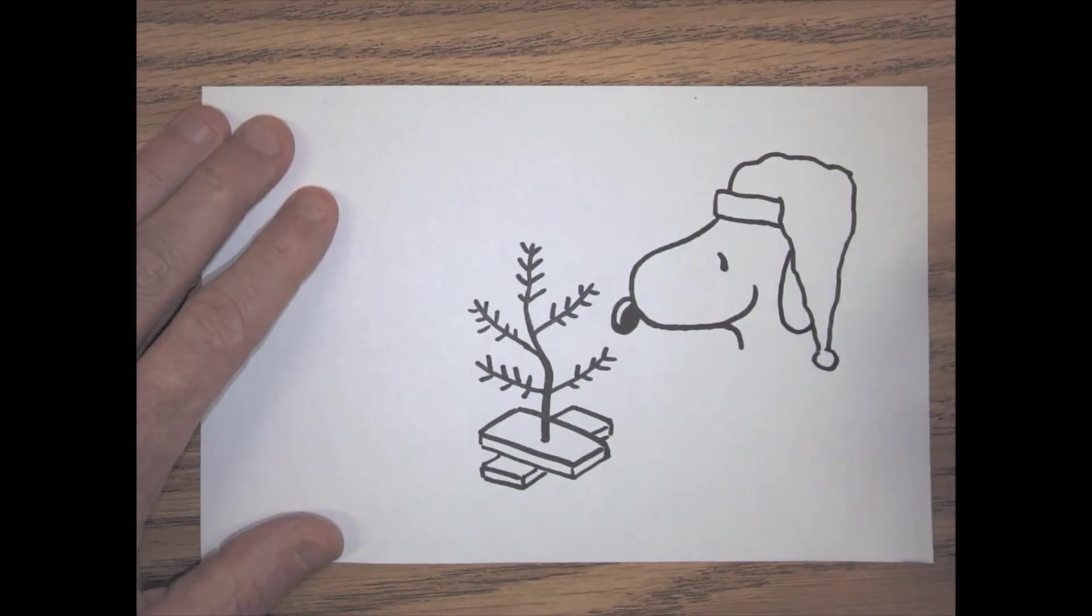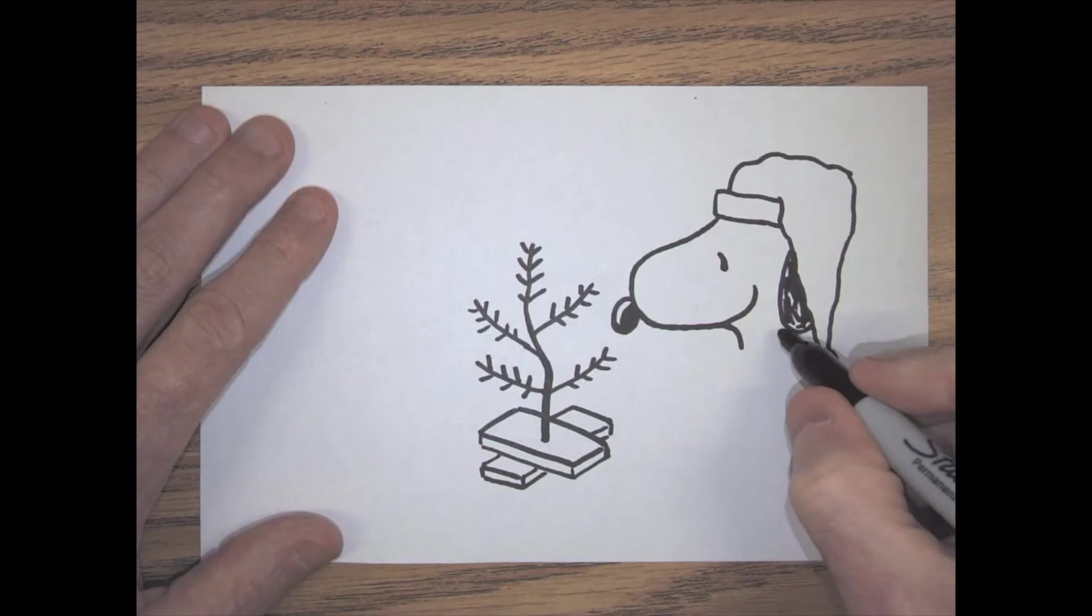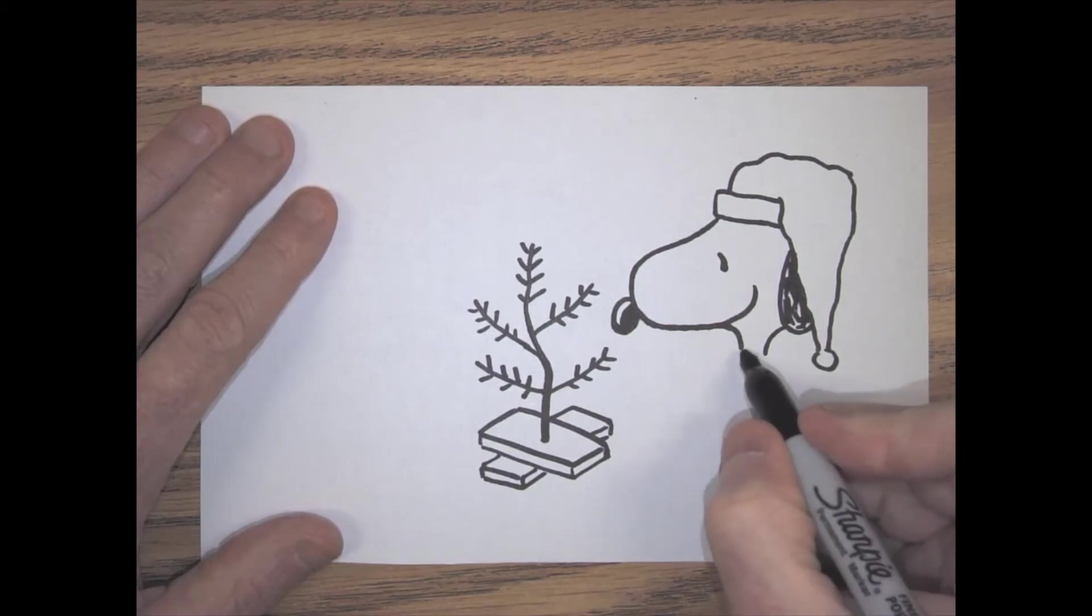And then his ear. Now if you've ever seen any of the Charles Schulz, the guy who created Snoopy, if you've ever seen his drawings, he doesn't color in everything. He kind of leaves some of it a little bit white, so I'm leaving some areas of white. From his ear we're going to come forward. That'll create his neck, and then we'll put on his little collar.